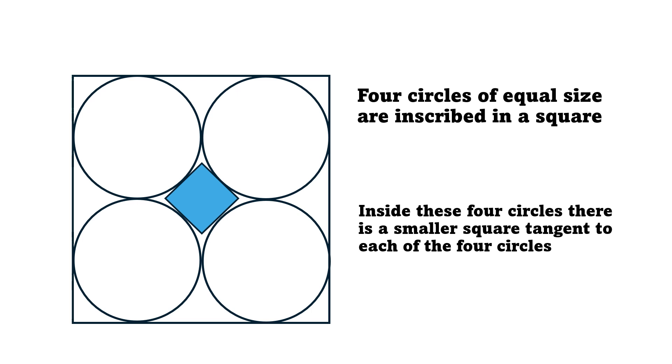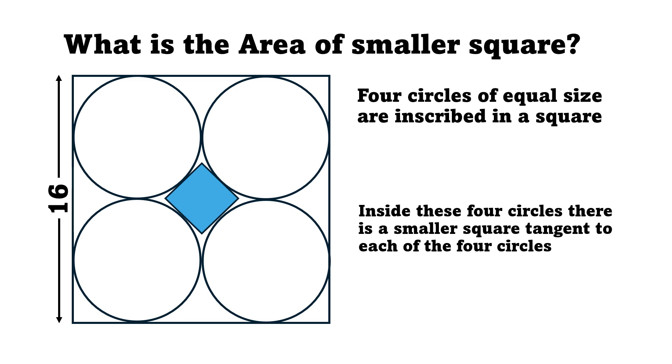Inside these four circles there is a smaller square tangent to each of the four circles. If the side length of this larger square is 16 units, then we have to find the area of this smaller square.